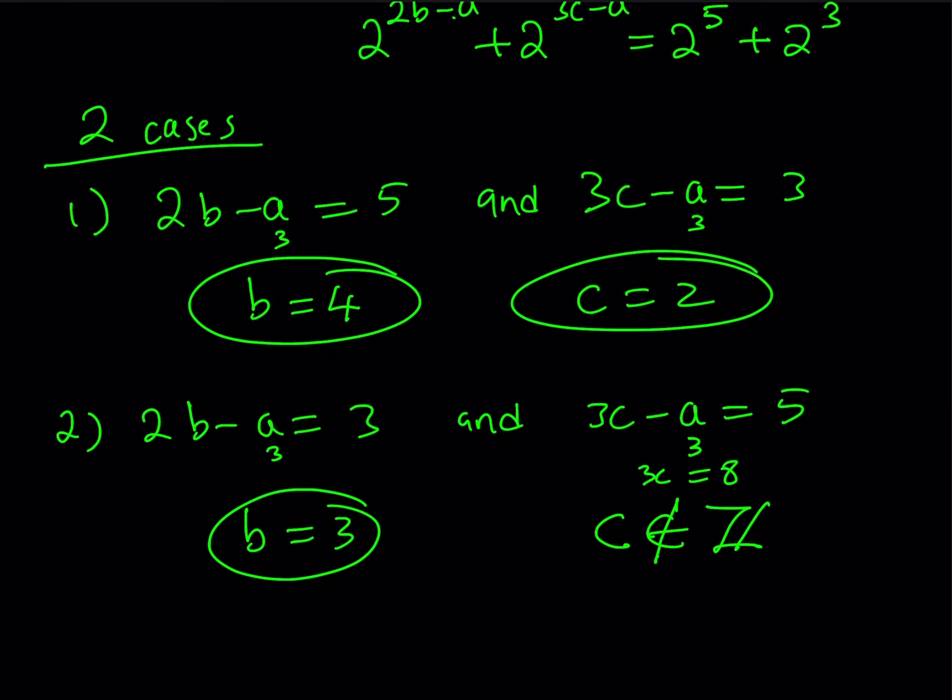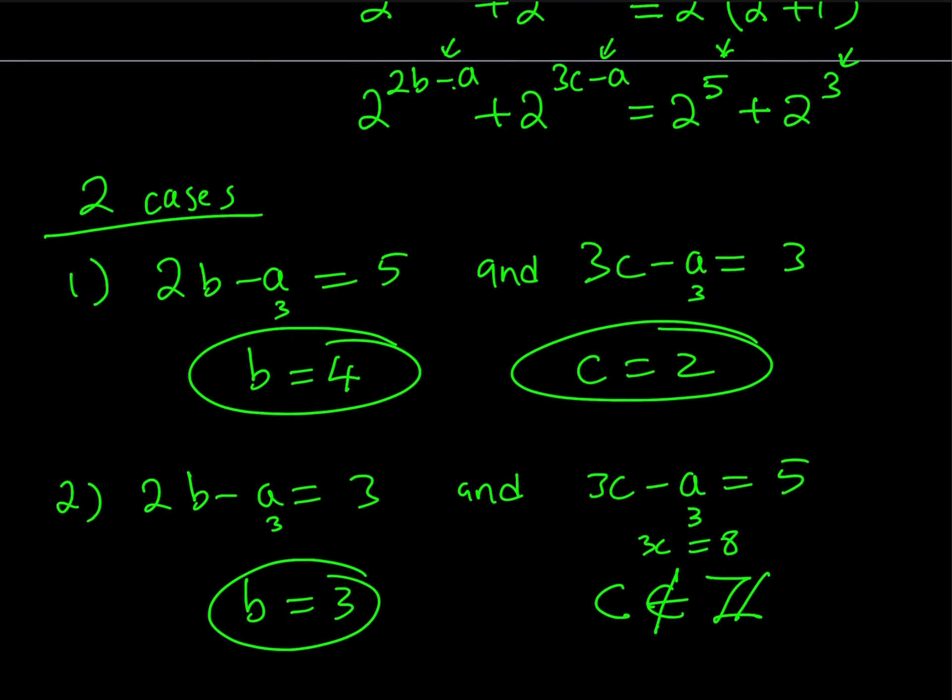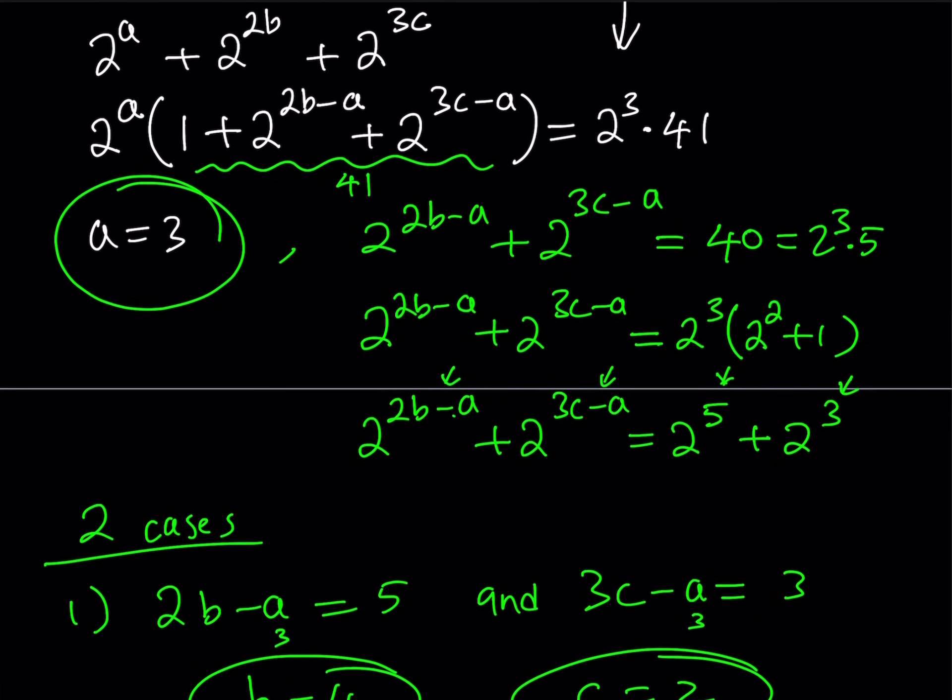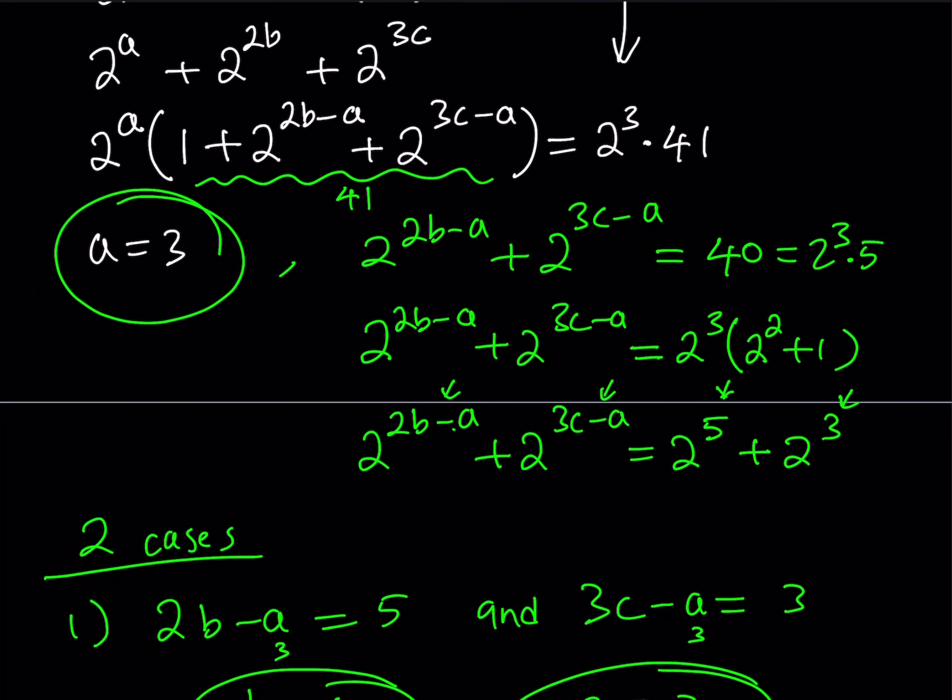What is that supposed to mean? We're not getting any solutions from the second case. Does that make sense? Hopefully that does. Now, if you put it all together, we're going to be looking at a single solution here. a equals 3, b equals 4, c equals 2. But is there a way that there can be other solutions?